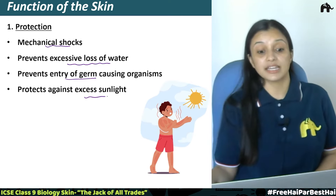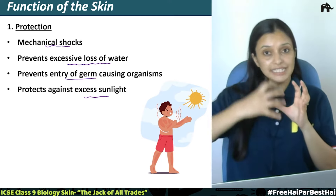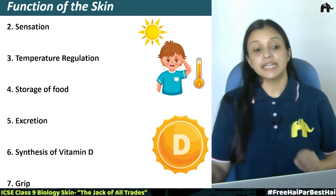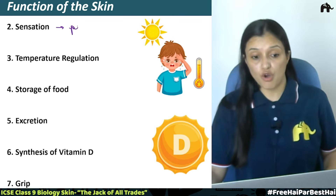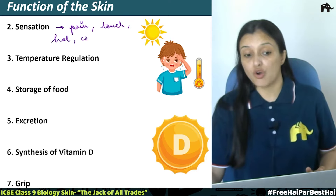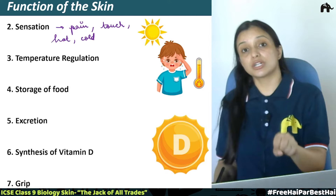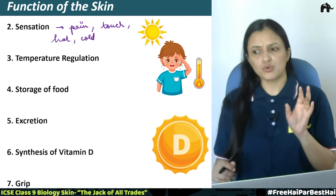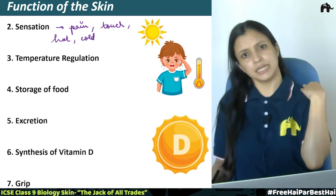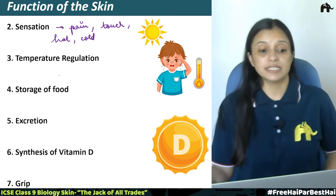The skin also protects against excess sunlight. Our body has very important vital organs that need protection from sunlight. The second function is sensation — sensation of pain, sensation of touch, sensation of hot and cold. If you touch a warm or cold thing, your skin senses it. If someone touches your shoulder, your skin will be able to sense that. So sensation is another important function of the skin.